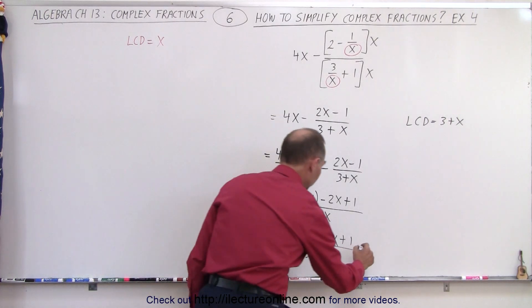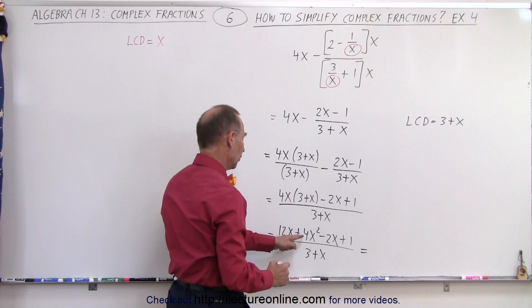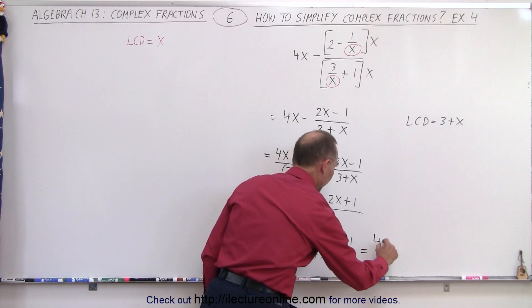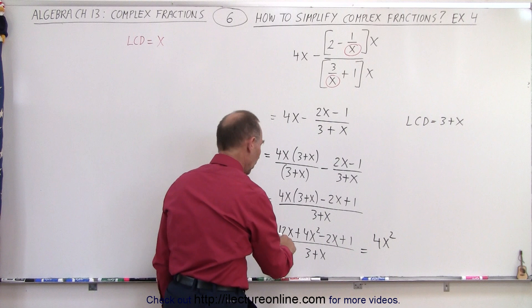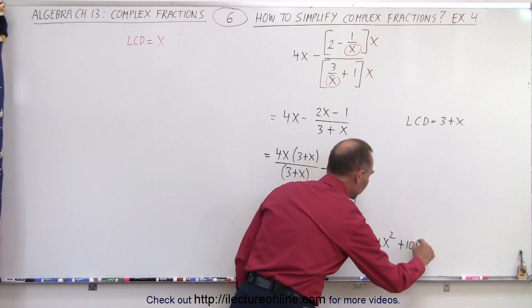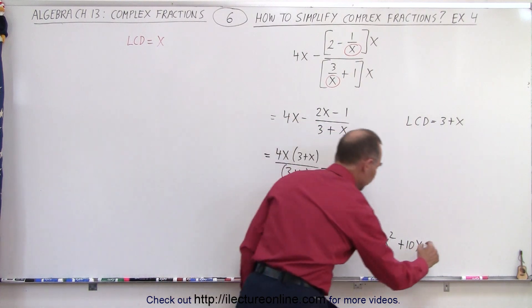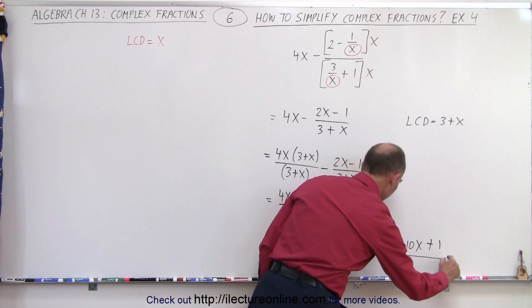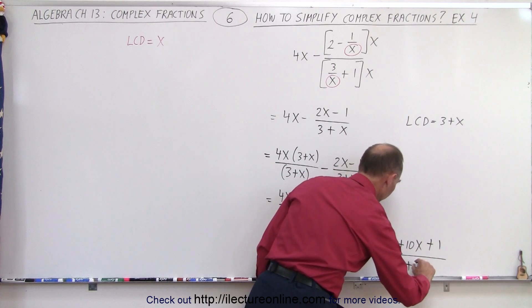Collecting common terms, this is equal to 4x squared. 12x minus 2x, which would be plus 10x, and plus 1, all divided by x plus 3.